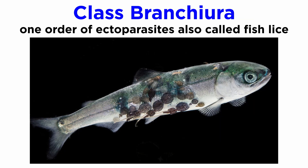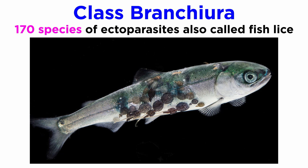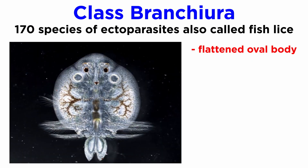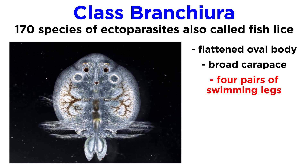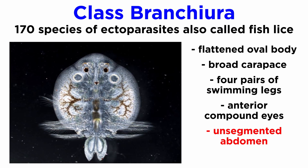Branchiura is a parasitic class of ectoparasites commonly called fish lice, all of which are in the same order. They were once thought to be highly derived copepods but are now classified as their own class. There are about 170 described species, which can be found on both marine and freshwater fish. They have a flattened oval body almost entirely covered by a broad oval carapace, four pairs of swimming legs, a pair of anterior compound eyes, an unsegmented abdomen, and highly modified mouths that feed on the blood or mucus of their hosts.